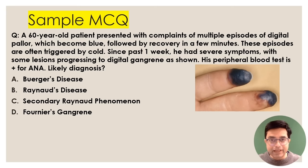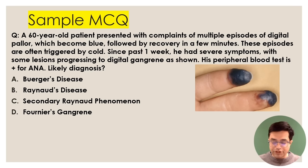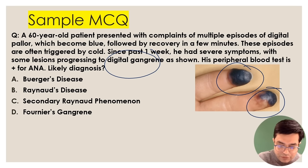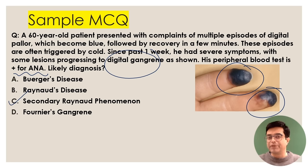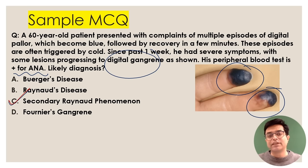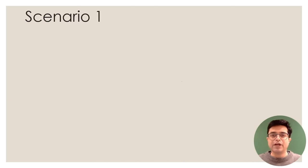Returning to the MCQ: the patient had Raynaud's phenomena that progressed to digital gangrene on exposure to cold, with a history of digital gangrene, and the patient is also positive for ANA. This is not likely to be Raynaud's disease or primary Raynaud's phenomena — it is secondary Raynaud's phenomena, most commonly seen due to systemic sclerosis, also called scleroderma.